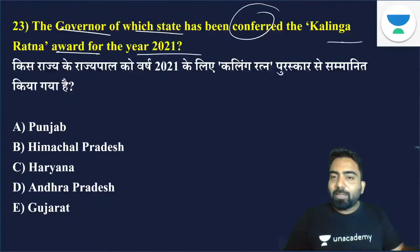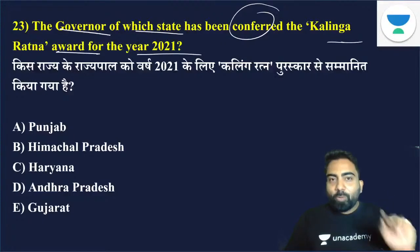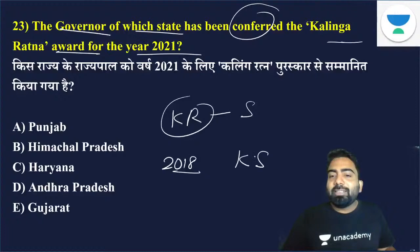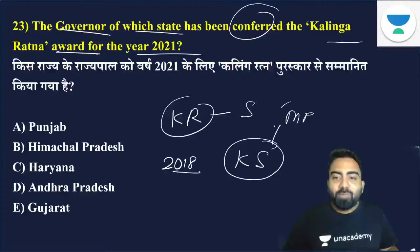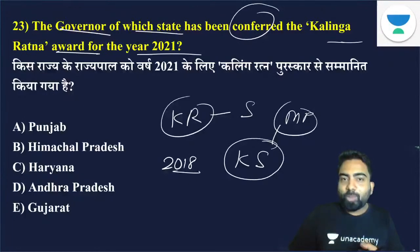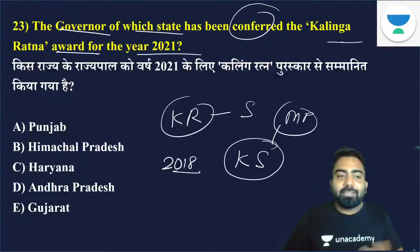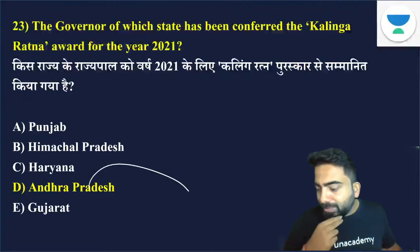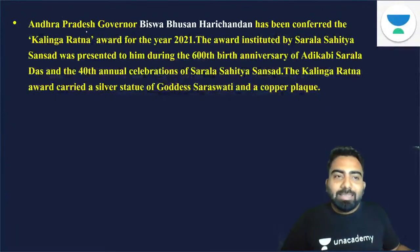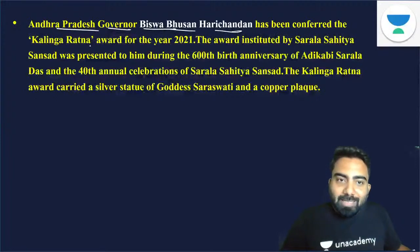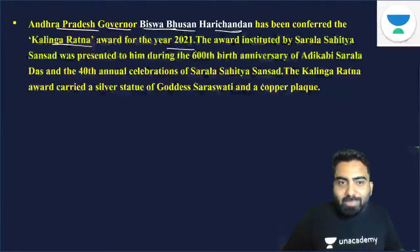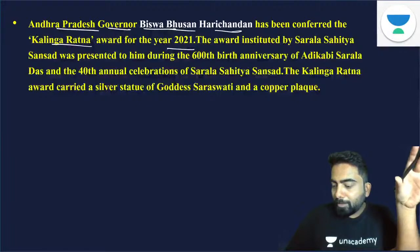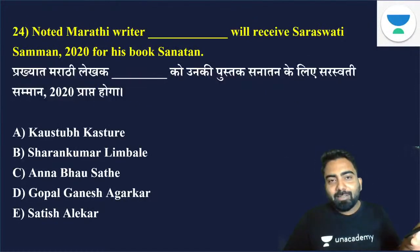Which state's Governor was given the Kalinga Ratan Award 2021? A similar question could be asked about which state gives the Kalinga Ratan Award — the answer is Odisha. The Kalidasa Samman is given by Madhya Pradesh. The answer to the main question is Andhra Pradesh. The Governor of Andhra Pradesh, Biswabhusan Harichandan, received the Kalinga Ratan Award for 2021.